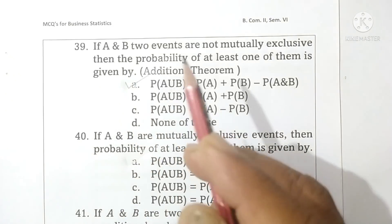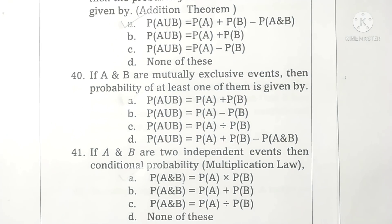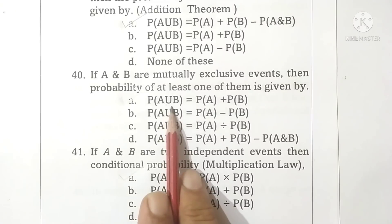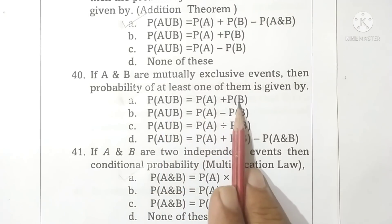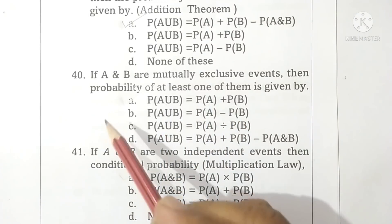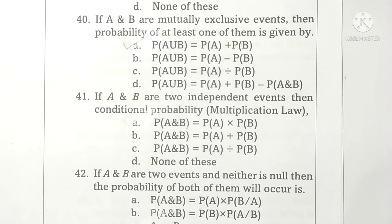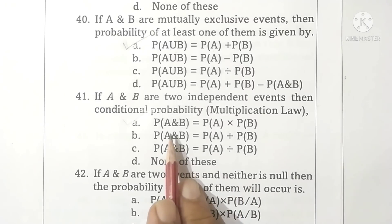Question 40: If A and B are mutually exclusive events, then the probability of at least one of them is given by probability A union B equals probability A plus probability B. Option A is correct. Question 41: If A and B are two independent events, then the conditional probability is given by probability of A and B equals probability A multiplied by probability of B. Option A is correct.